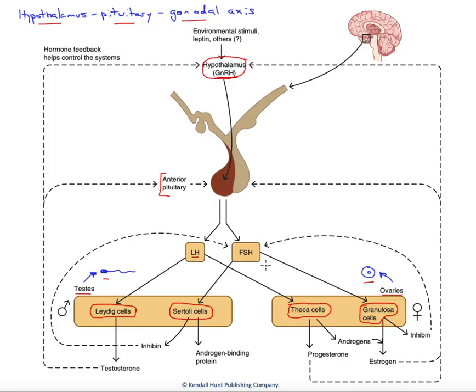These cells produce LH, luteinizing hormone, and FSH, follicle-stimulating hormone. These are both named according to their functions in females, even though they're active in both sexes.